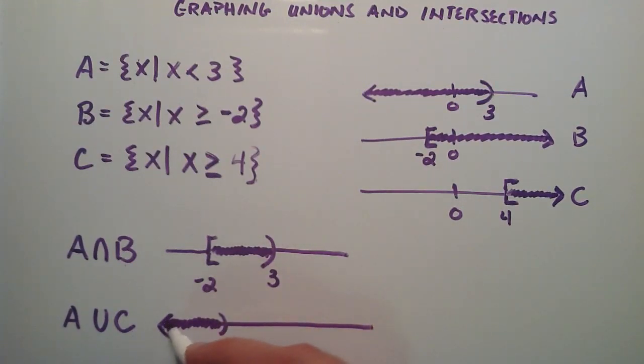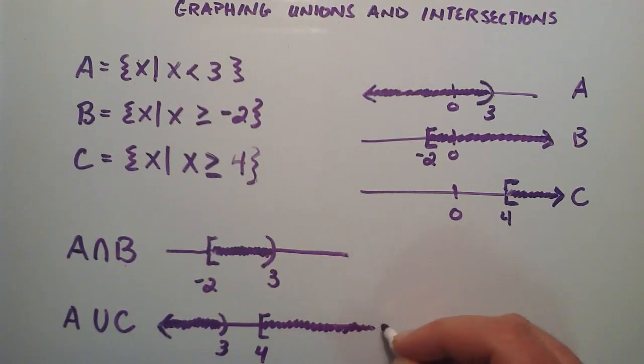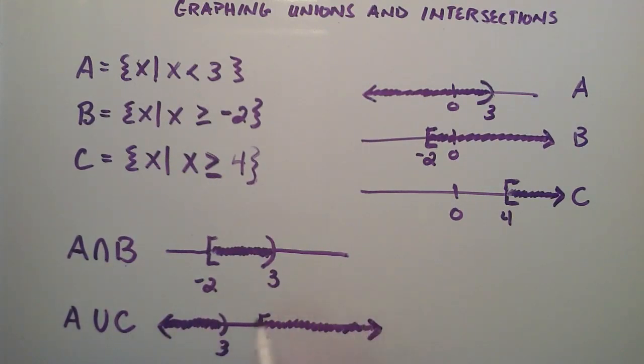And then C, we just go ahead and start with that at the 4, and we just shade that in all the way down the number line. So this represents A union C. It's all of the elements in A, and all of the elements in C.